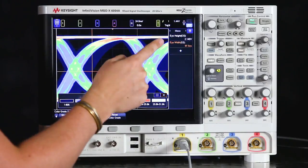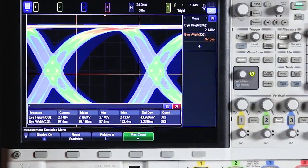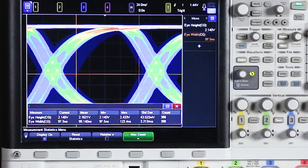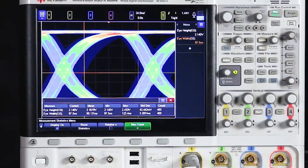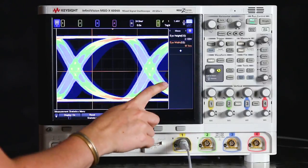And we can take a look at the statistics of those in the measurements menu by turning on the statistics display and we can see the mean of those measurements. So this is going to give us a better understanding of what's happening on average in this signal. And we can learn more information from this eye by really quickly bringing up a histogram.